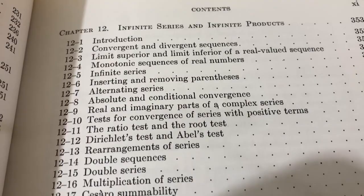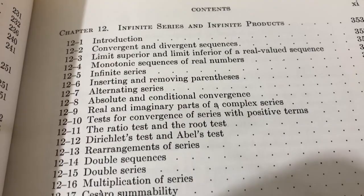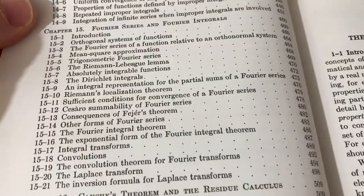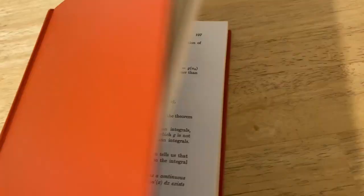Chapter 12 is on infinite series and infinite products, chapter 13 is sequences of functions, chapter 14 covers some integrals, chapter 15 is Fourier series and Fourier integrals, and chapter 16 is on Cauchy's theorem and the residue calculus. This book has a lot of topics you won't find in other advanced calculus books. It's really comprehensive, and honestly, for the amount of material it contains, it's a pretty small book — which becomes evident when you try to read it because it's very terse.